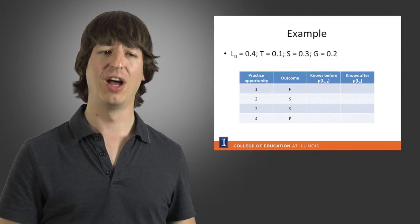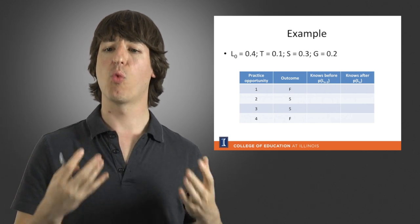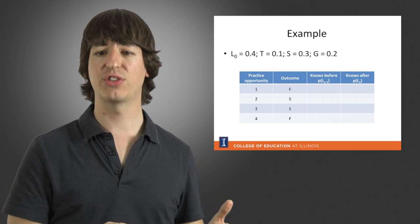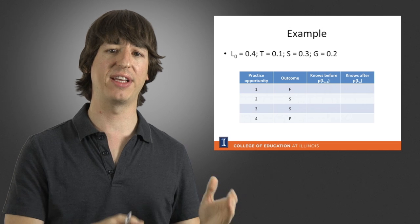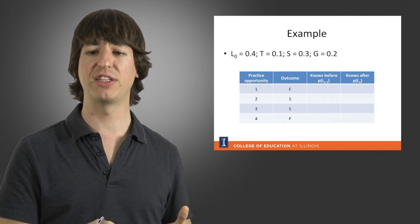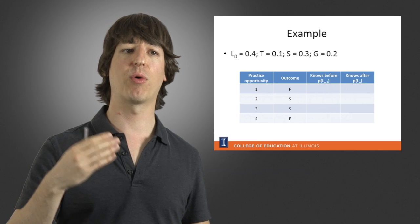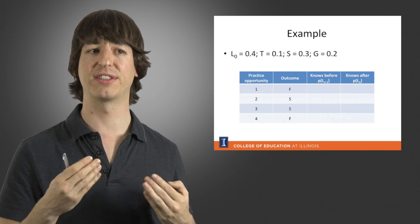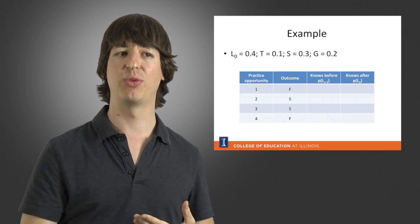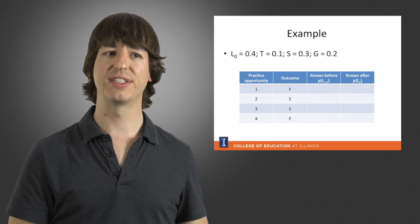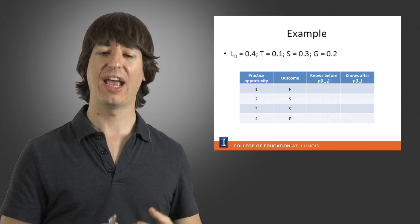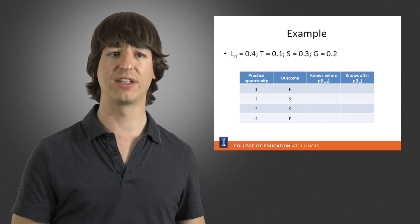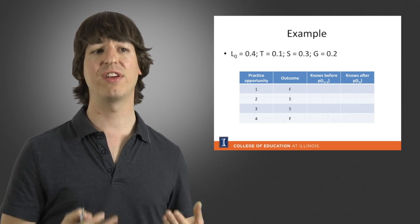Let's walk through an example of applying a Bayesian knowledge tracing model. The model is defined by four parameters: L0 = 40% (there's a 40% chance the student knows the skill before the first practice opportunity), T = 10% (10% chance the student learns the skill each time they apply it), S = 30% (30% chance the student slips and incorrectly applies the skill even if they know it), and G = 20% (20% chance the student guesses the correct answer even if they don't know the skill).